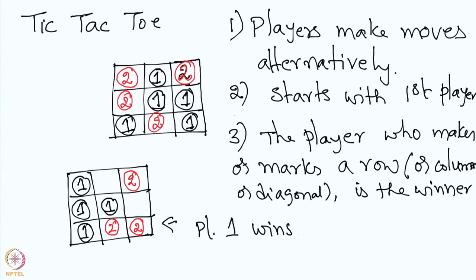This is tic-tac-toe. Of course, we also have the option of a draw. But in most combinatorial games, we always assume that the game ends either in a win or a loss. Tic-tac-toe, since it is well known to us, is used to illustrate the ideas of combinatorial games. Even though in a classical sense tic-tac-toe is not a combinatorial game, the arguments we develop in combinatorial games are used to analyze such games.